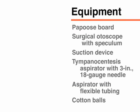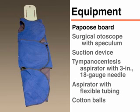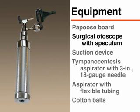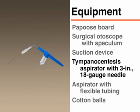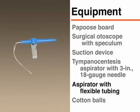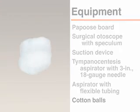The following equipment is necessary: a papoose board, a surgical otoscope with speculum, a suction device, a tympanocentesis aspirator with a 3-inch 18-gauge needle, a second aspirator with flexible tubing, and cotton balls.